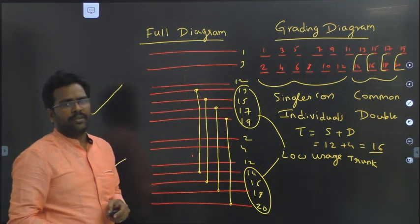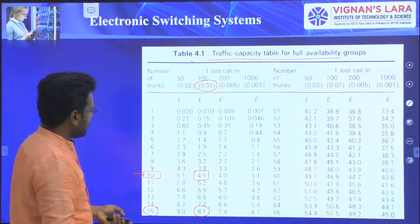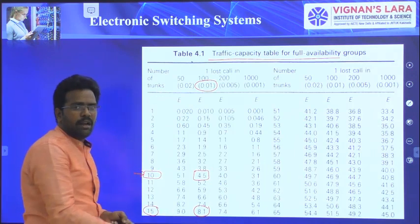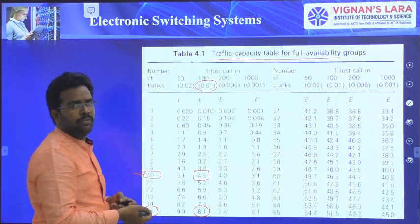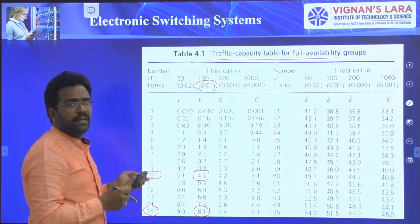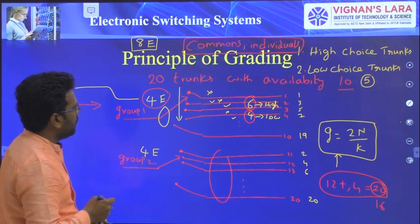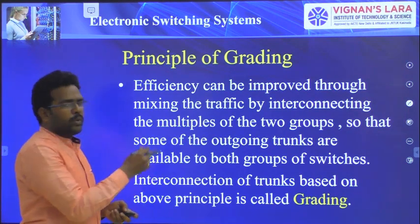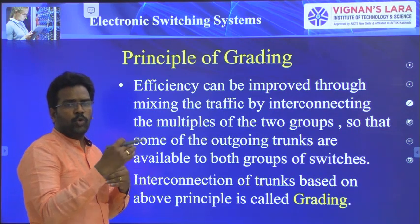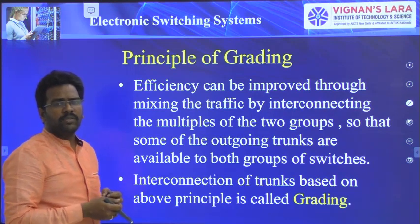For 16 trunks, the traffic capacity for full availability is 8.1 Erlangs from the table — but we are getting 8 Erlangs for 16 trunks, which is good compared to the previous design of 4.5 Erlangs for 10 trunks. So the process of interconnecting these groups to obtain the required availability with minimum grade of service is called grading.